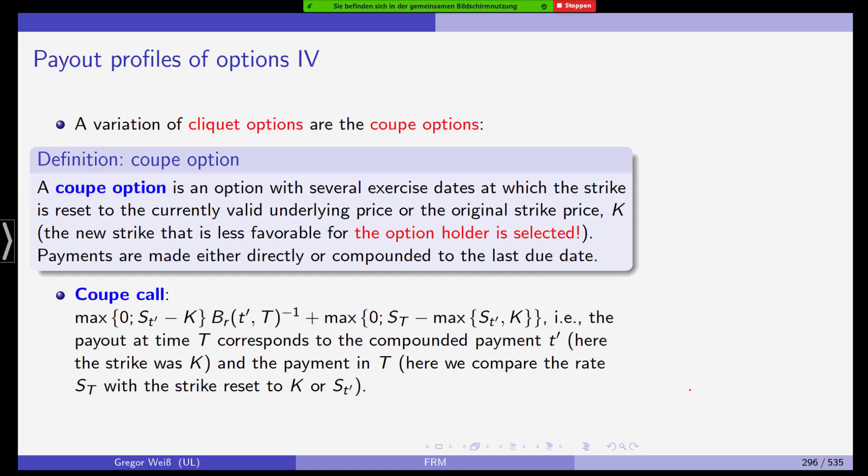Then we have a cube option. A cube option is an option with several exercise dates at which the strike is reset to the currently valid underlying price or the original strike price, whichever is less favorable for the holder of the option. So they should be cheaper than a cliquet option. So a cube call is the maximum of 0, ST' minus K, compounded, plus the maximum of 0, ST minus, and now we would have the strike. And we take the maximum of the original strike and the reset strike, which was set to the underlying price at the reset date, whichever is less favorable to the option holder. And thus, we take the maximum.